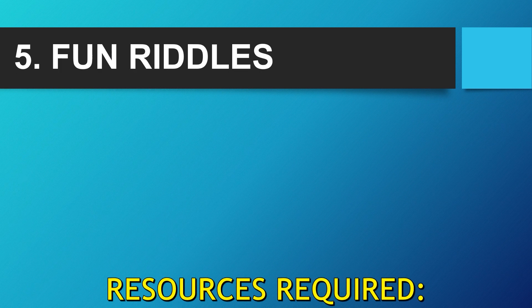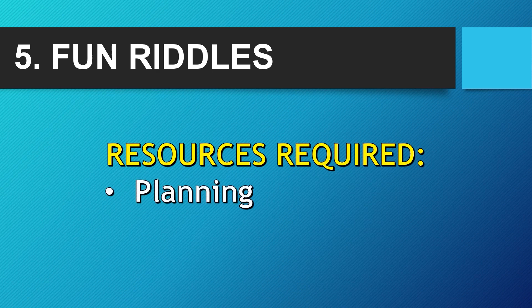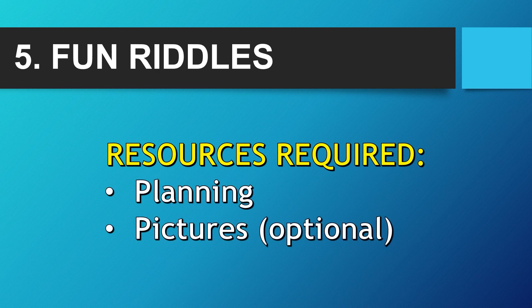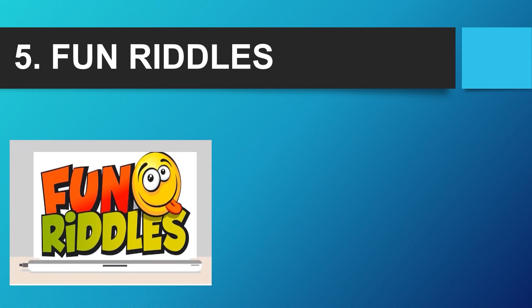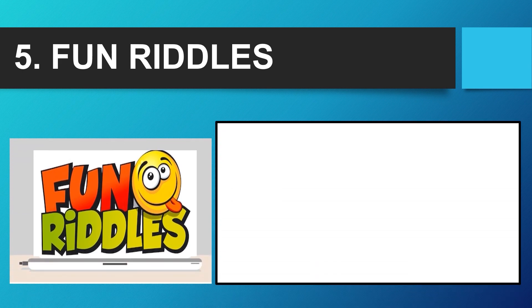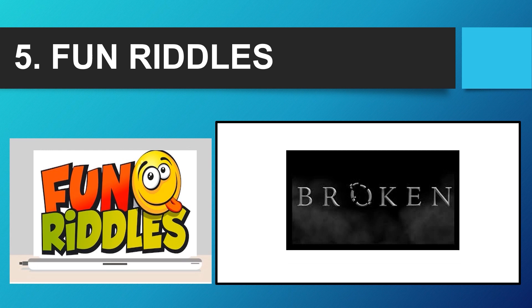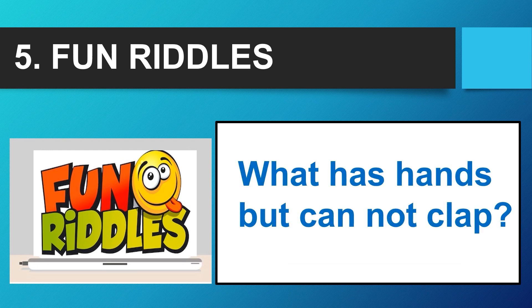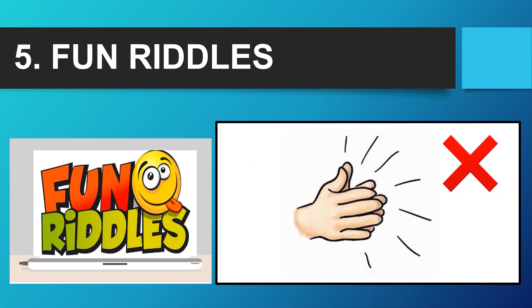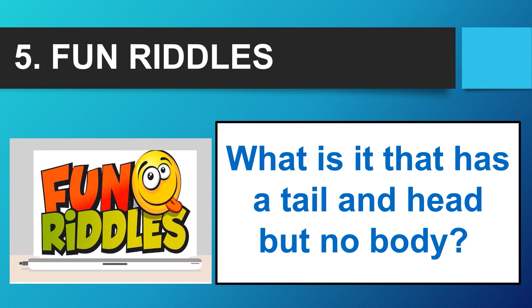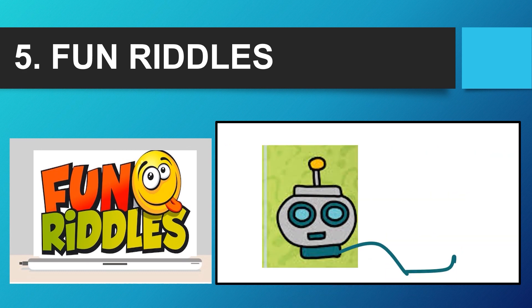The fifth game is 'Fun Riddles.' You can use educational facts or any other facts — naming words and other things can be taught through riddles. For example: 'What has to be broken before you use it?' Think, think — did you get it? 'What has hands but cannot clap?' Hmm, what are you thinking? 'What is it that has a tail and a head but no body?' Now this is worth a thought!